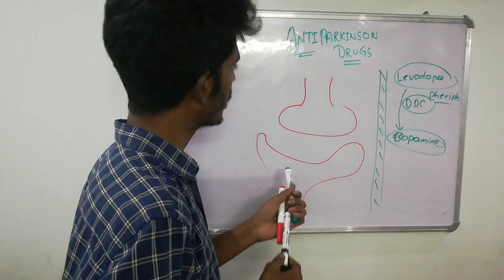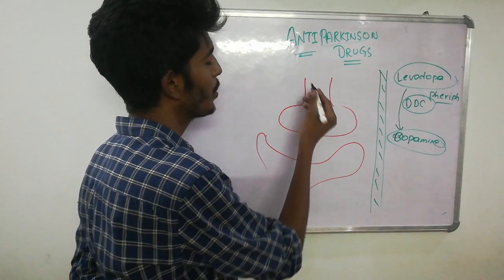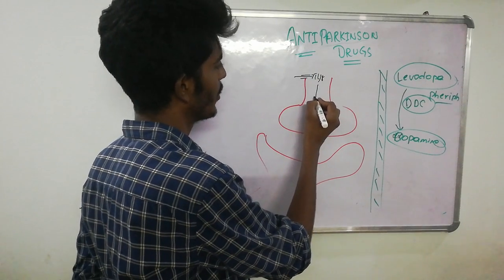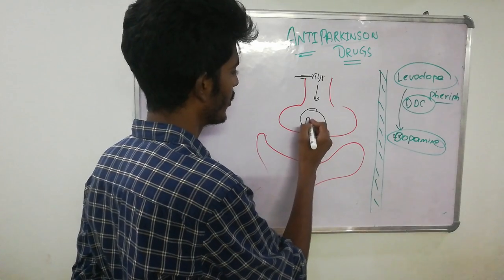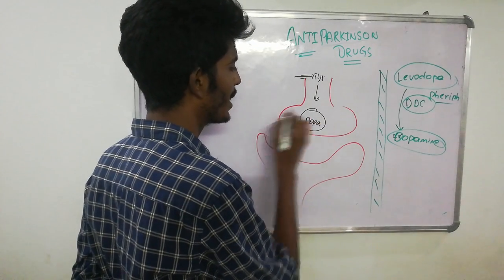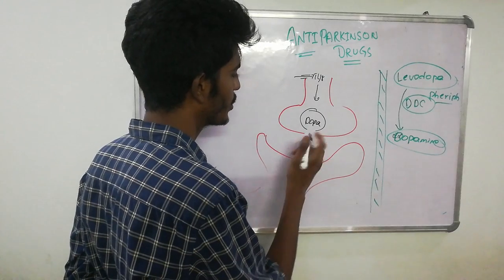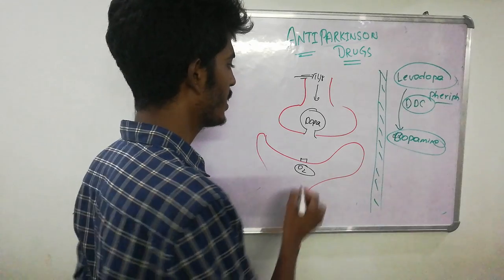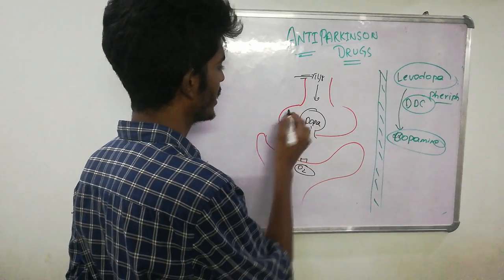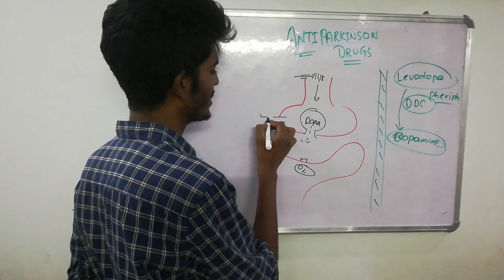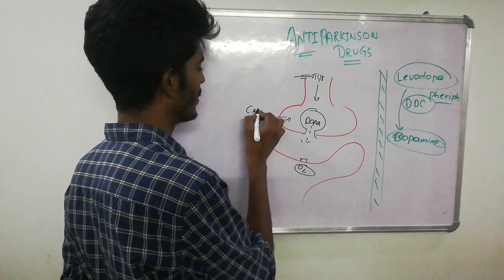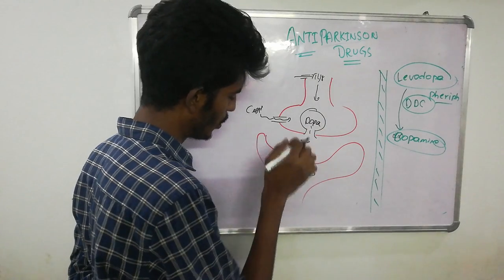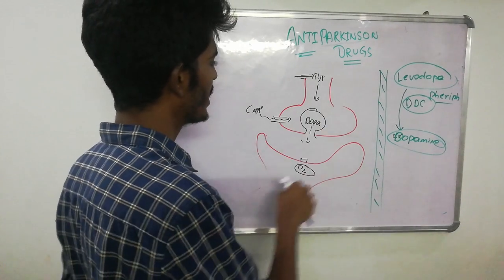Let's come back to our neuron. How does dopamine form? Dopamine is formed from the amino acid tyrosine. Tyrosine is converted through several steps and at the end converts into dopamine. Dopamine is stored in granules. Whenever a signal comes, the pre-synaptic calcium channel opens, calcium comes in, causing exocytosis of dopamine, which then acts on the D2 dopamine receptor.